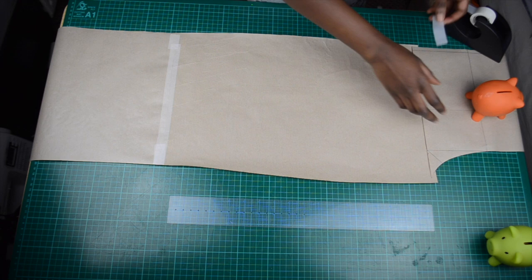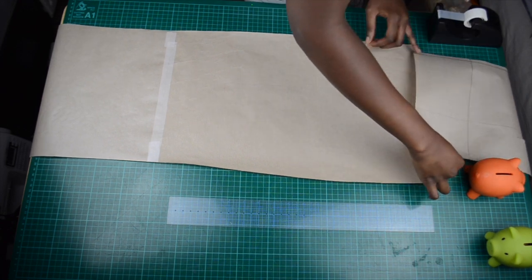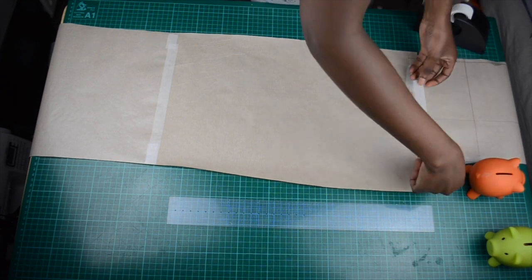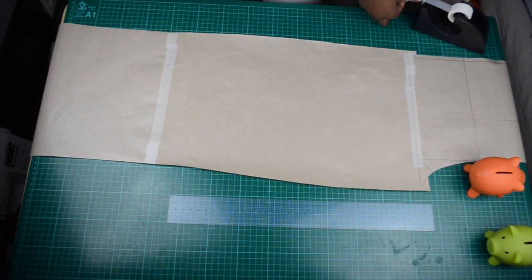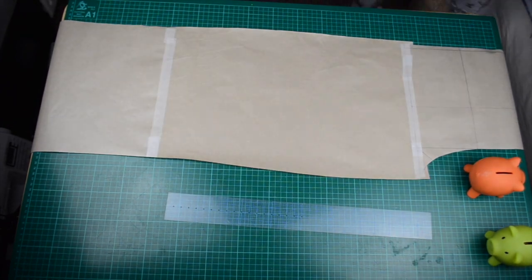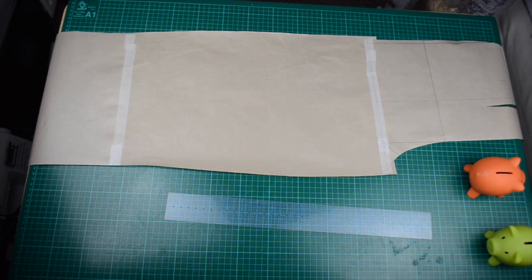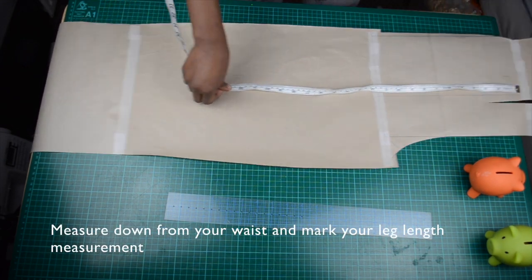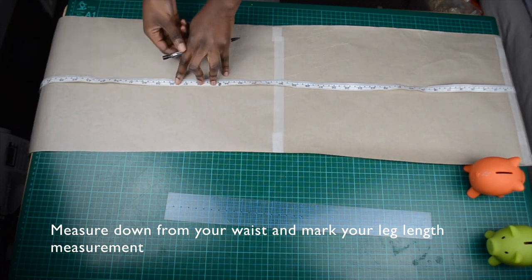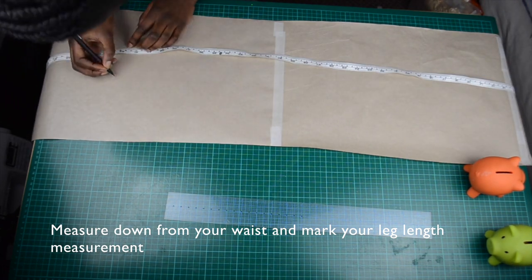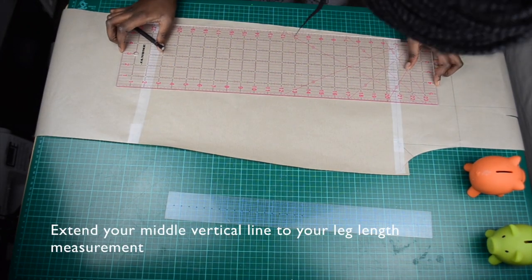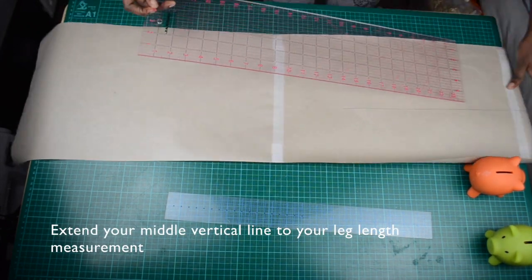We're now going to extend the length of our trouser legs to the length that we want. Starting with the front section, I've attached a long piece of paper for this. Measure down from your waistline your leg measurement and mark it. Extend the mid-vertical line down to the point of where you marked your leg length.